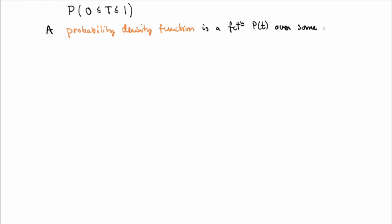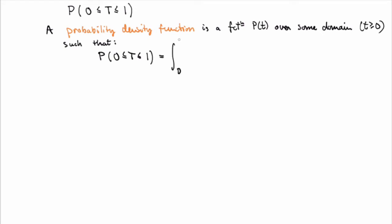A probability density function is defined over some domain — in this case T greater or equal to zero, because the waiting time could be anything above zero — such that this probability is given by the area under the curve. In other words, the probability that T is between zero and one is given by the integral from zero to one of the probability density function.